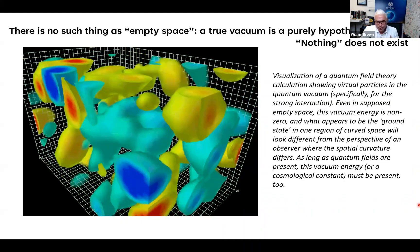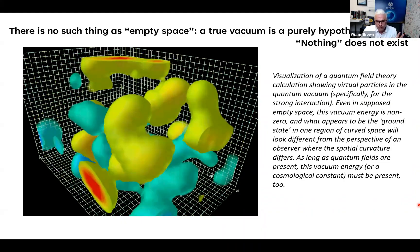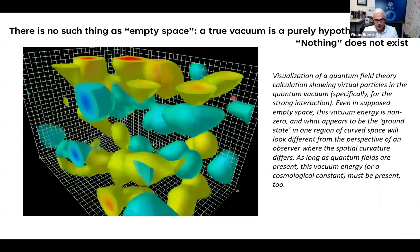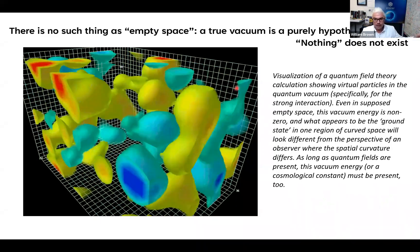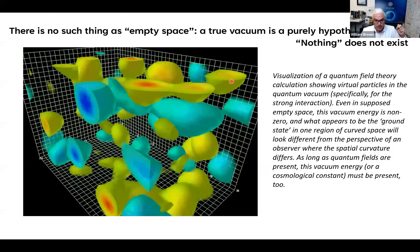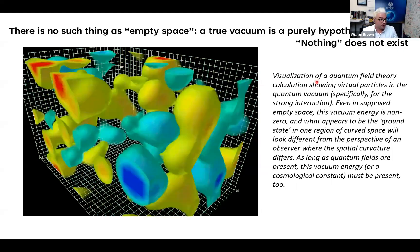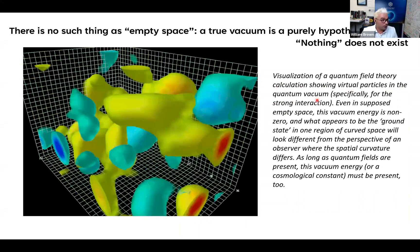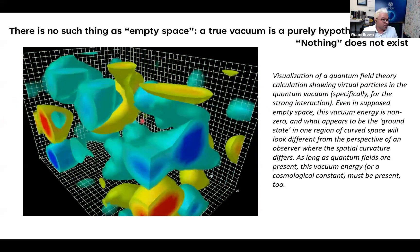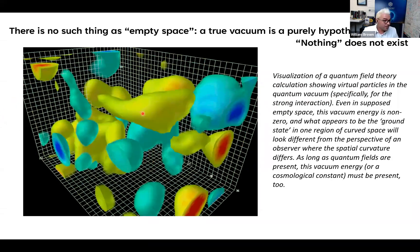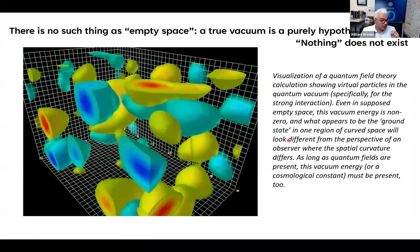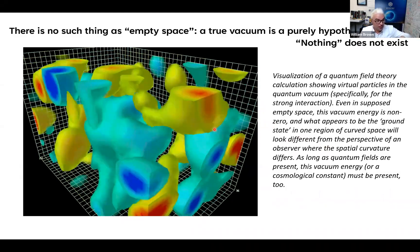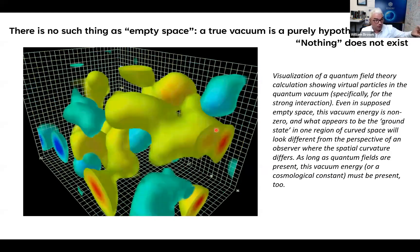These quantum vacuum energy fluctuations are not trivial, they're non-trivial. For example, as we are seeing in this simulation, in the theory of quantum chromodynamics, vacuum fluctuations are what gives hadrons, like the proton, their mass. So this is a visualization of a quantum field theory calculation showing virtual particles in the quantum vacuum, specifically for the strong interaction. Even in supposed empty space, this vacuum energy is non-zero. What appears to be the ground state in one region of curved space will look different from the perspective of an observer where the spatial curvature differs.